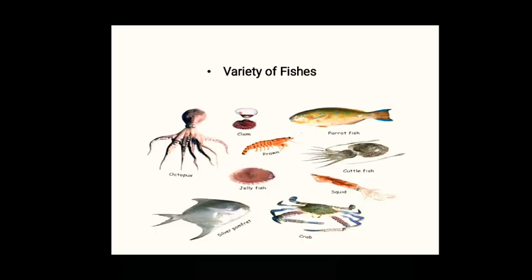Then we have 'Variety of Fish.' Different types of fish you will find in the sea. Different types of fish we will find in the chapter. We will find out which kind of fish you have seen and which kind of fish you will find in the books.